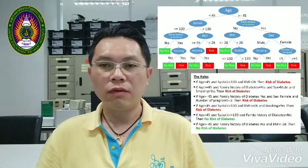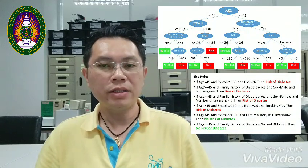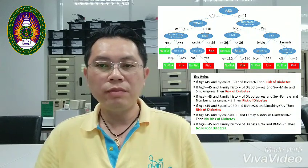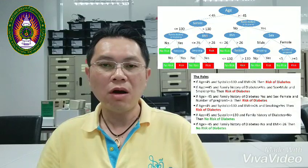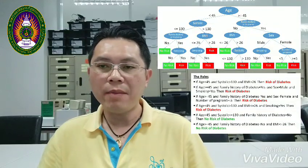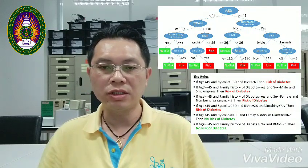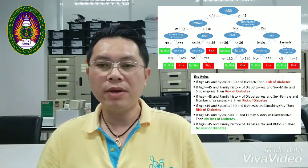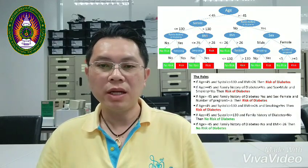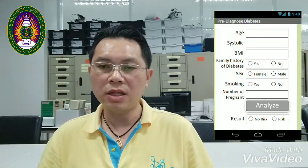The rules from the decision tree may be something like this. By these rules, I use them as the algorithm of a mobile application, so the mobile application can analyze the risk of diabetes condition. A mobile application may be something like this. This is the way that I will create my mobile application to analyze a risk of diabetes.